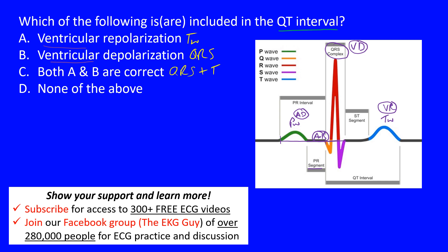The QT interval runs from the beginning of the QRS complex all the way to the end of the T wave. The QRS complex represents ventricular depolarization, and the T wave represents ventricular repolarization.